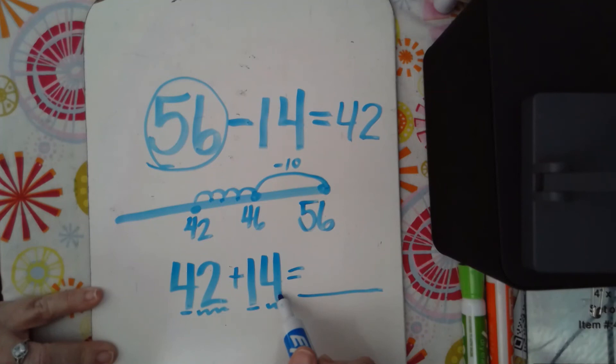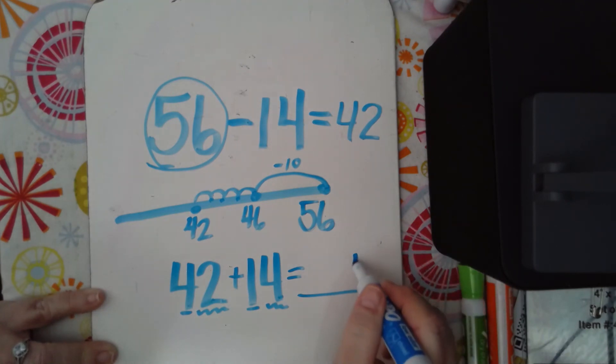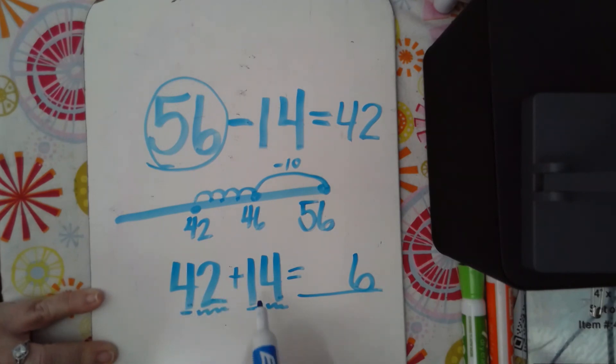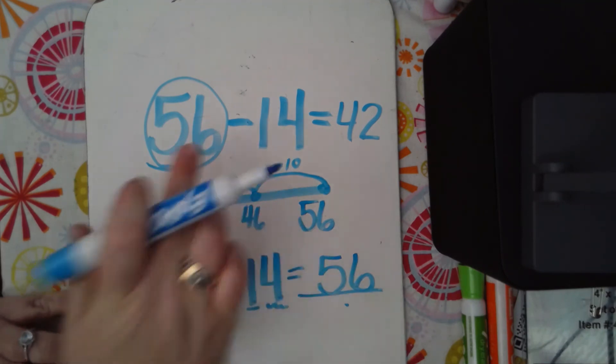2 ones plus 4 ones makes 6 ones. And then 4 tens plus 1 ten makes 5 tens. And looky here. See what we have. We have 56. So 56 minus 14 is 42. Then I can check myself by doing 42 plus 14 is 56. And so I know that my answer was correct.